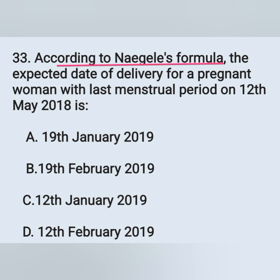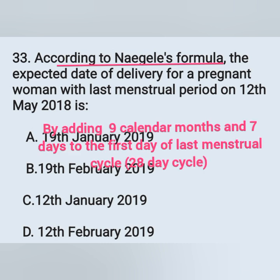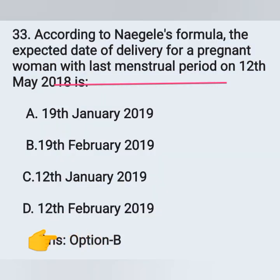Question 33: According to Naegele's formula, the expected date of delivery for a pregnant woman with the last menstrual period on 20th May 2018. In Naegele's formula, EDD is calculated by adding nine calendar months and seven days to the first day of the last normal period, applicable for a 28-day menstrual cycle. The LMP is 12th May, so adding nine calendar months gives February, plus seven days gives 19th February 2019. Option B is the correct answer.